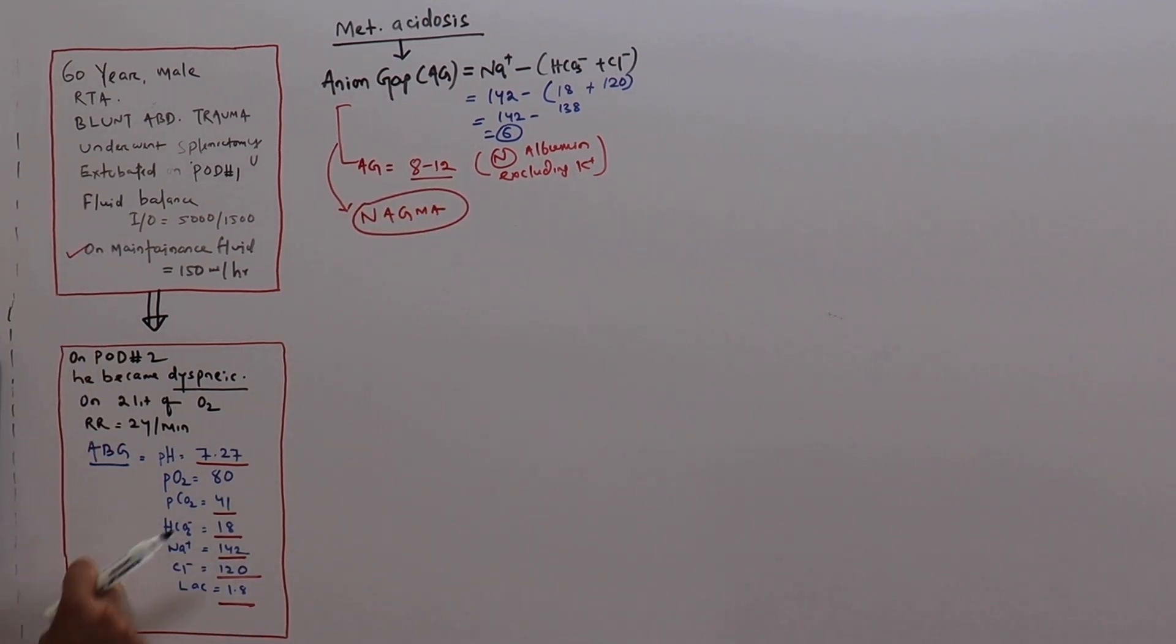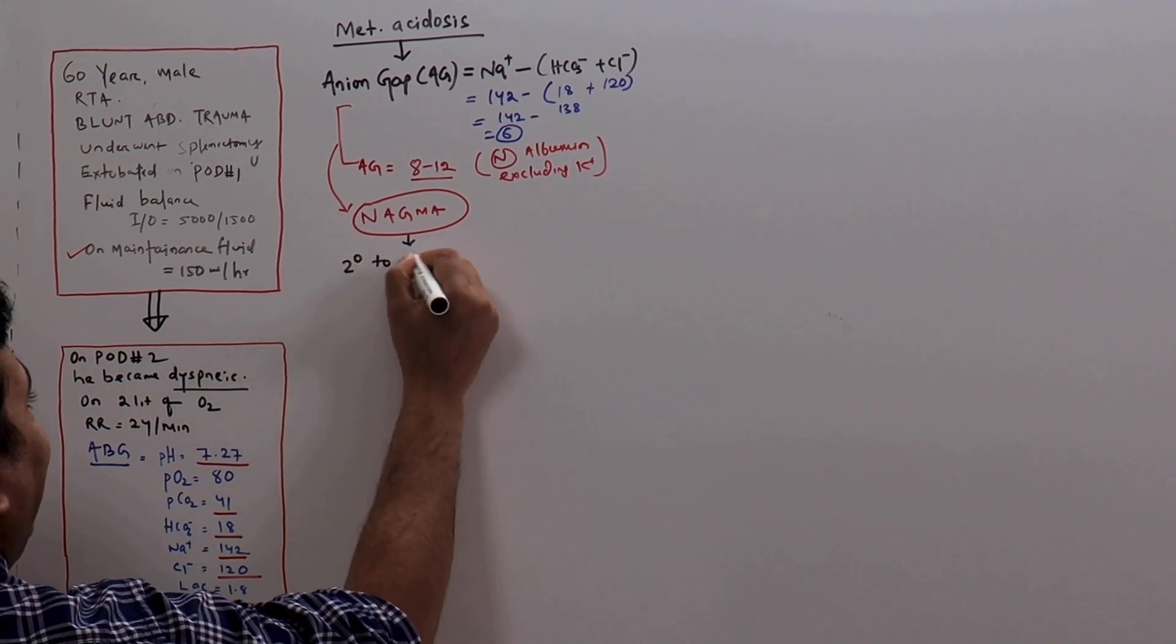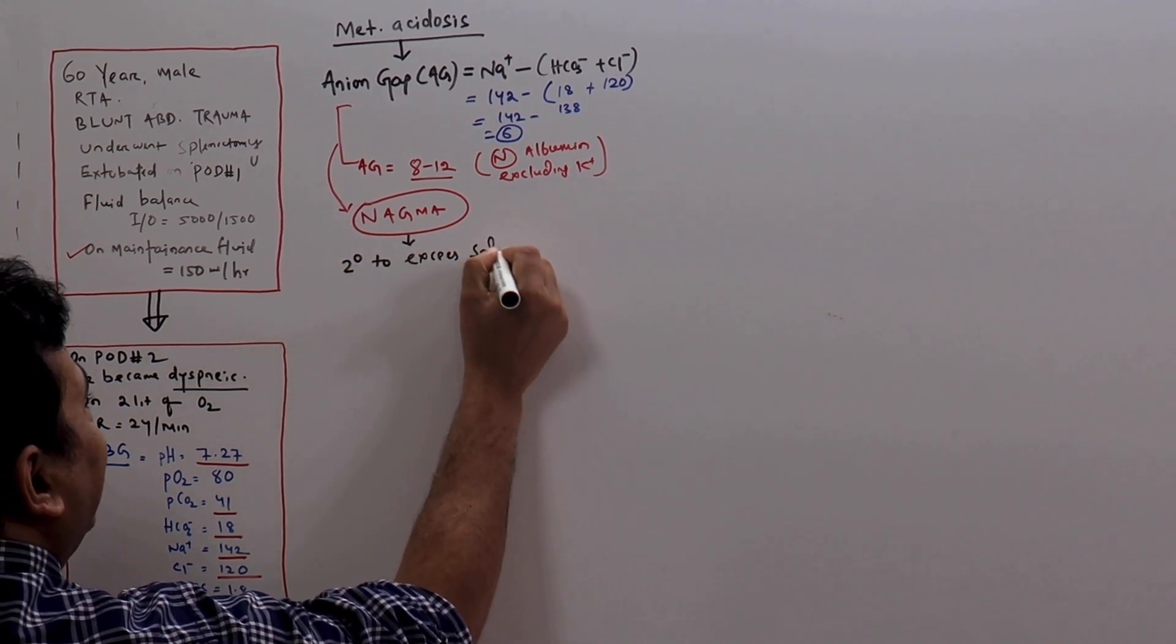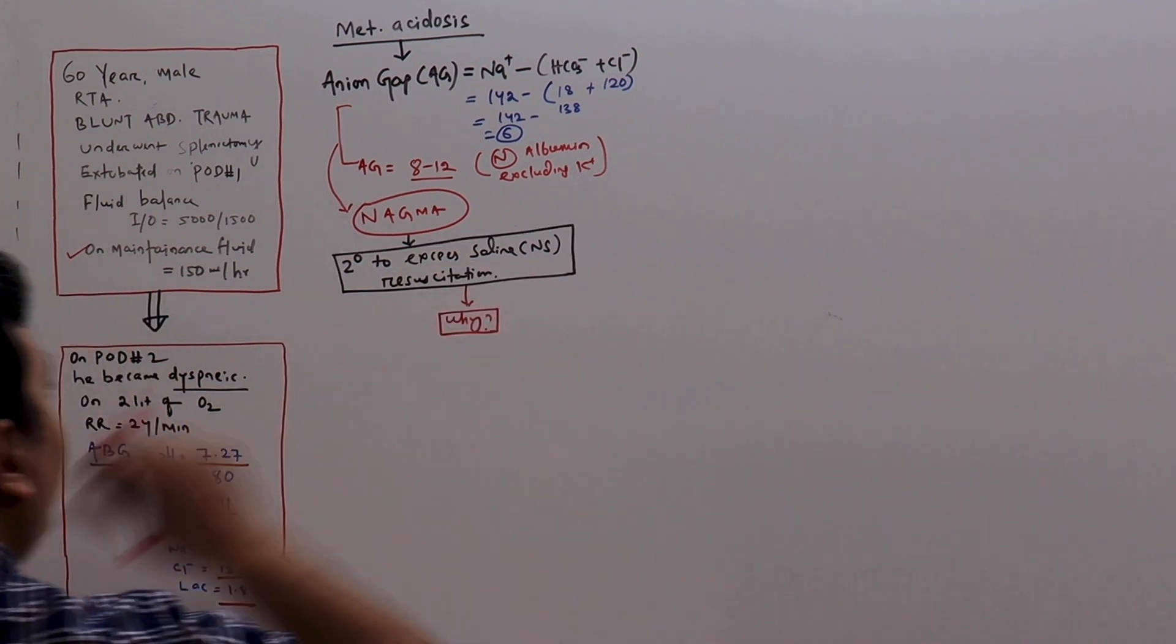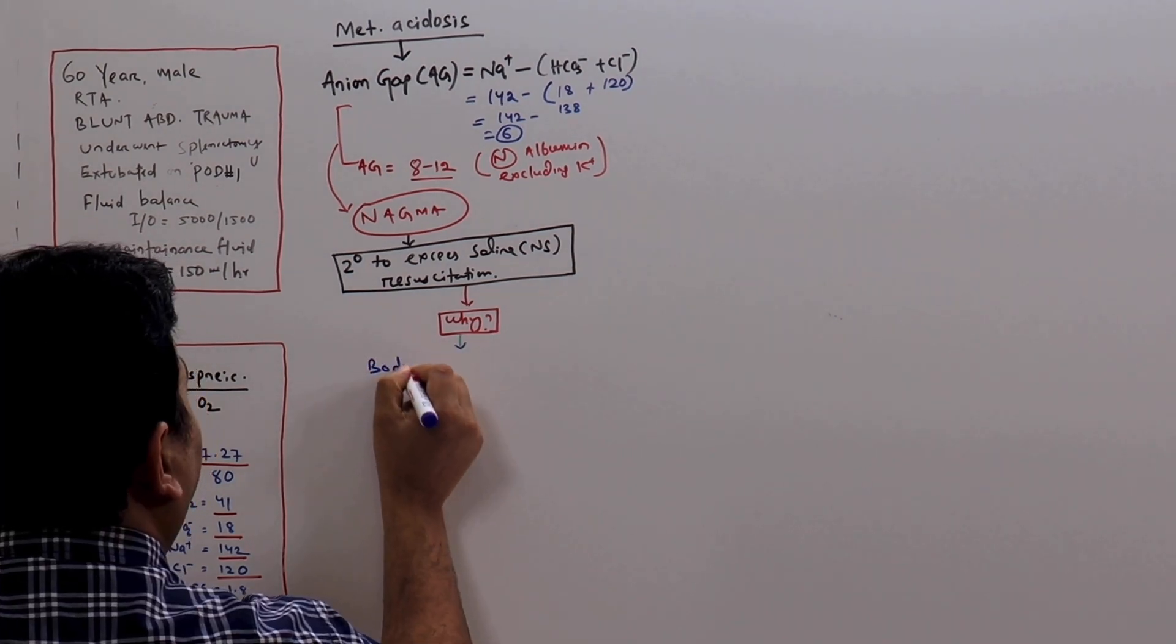What is the reason in this case? It is secondary to excess saline, normal saline resuscitation. Everybody knows if you give extra saline, there will be normal anion gap acidosis. But why?